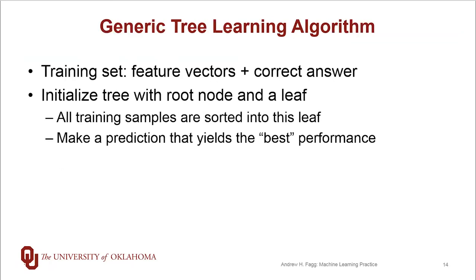So let's talk about really the generic algorithm in a bit more detail here. So this is fundamentally a supervised learning problem. So our training set is a set of pairs of feature vectors and whatever the correct label is, whether that's a class or some continuous value. We start by initializing that tree as an empty tree with just the root node and the leaf. So what this means is that the decision tree initially is not actually doing any sort of sorting. All of the training set samples fall within that one leaf.